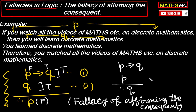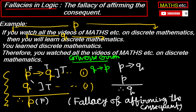Sometimes this fallacy is also called the converse error. Why? Because suppose the first premise were Q implies P — then with second premise Q, by modus ponens we get a valid argument: Q→P, Q therefore P. The problem is that Q implies P is the converse of P implies Q, and these two statements are not logically equivalent. P implies Q does not mean Q implies P. That is why the fallacy of affirming the consequent is also called the converse error.